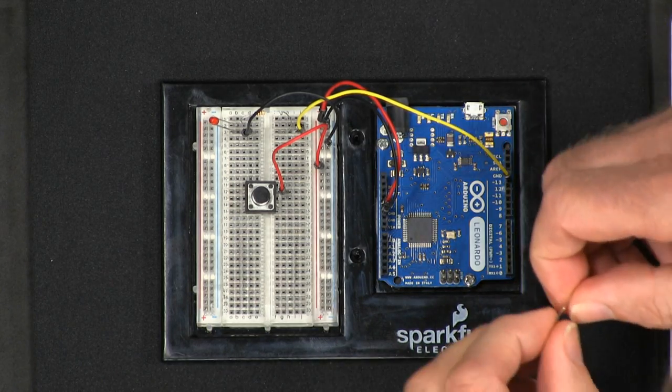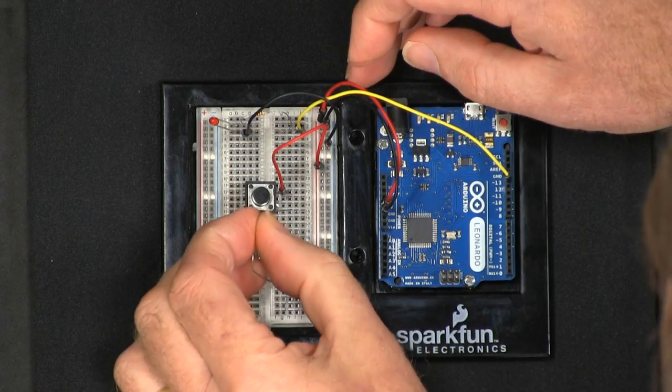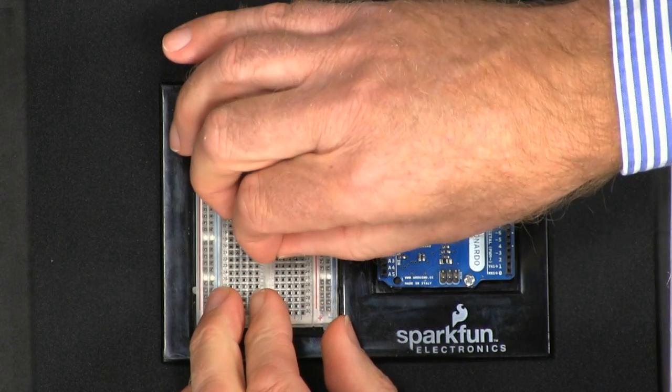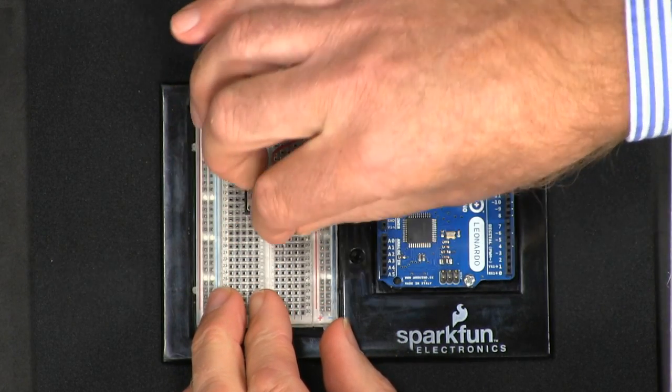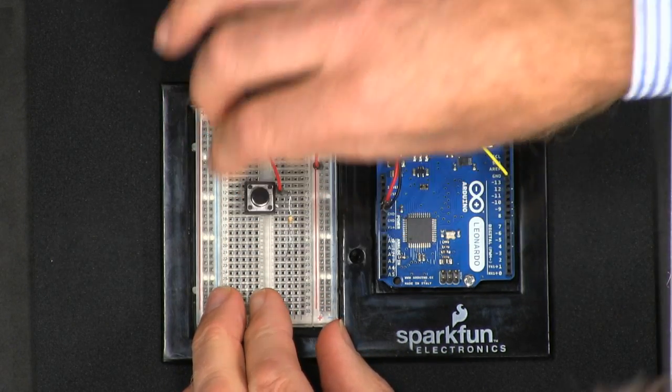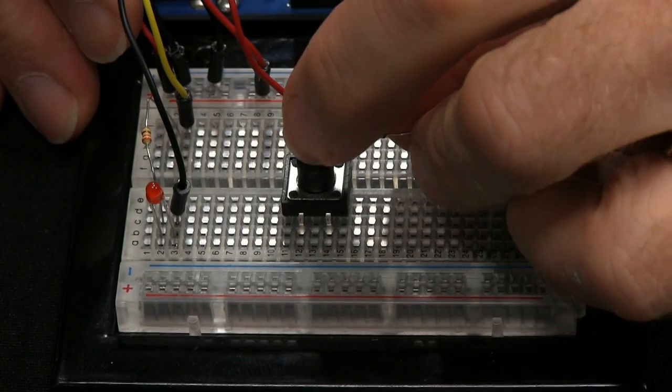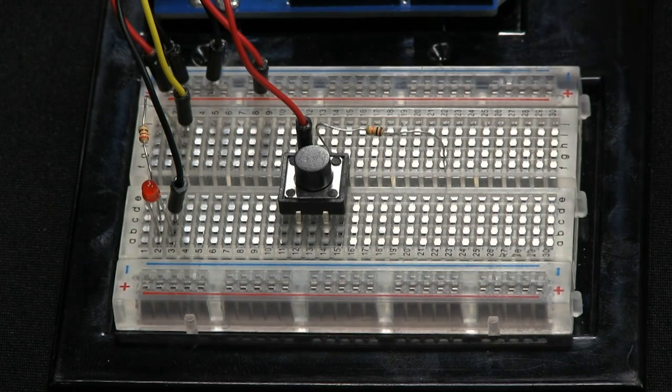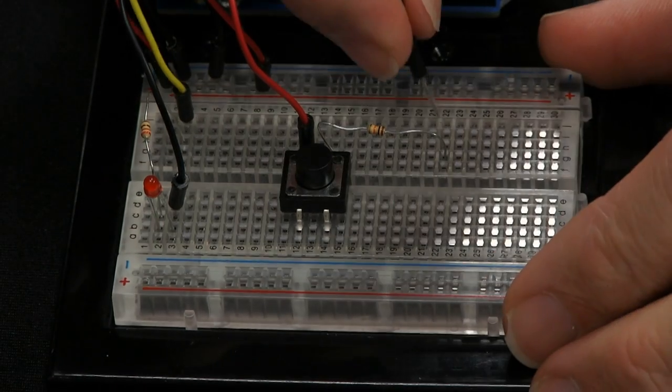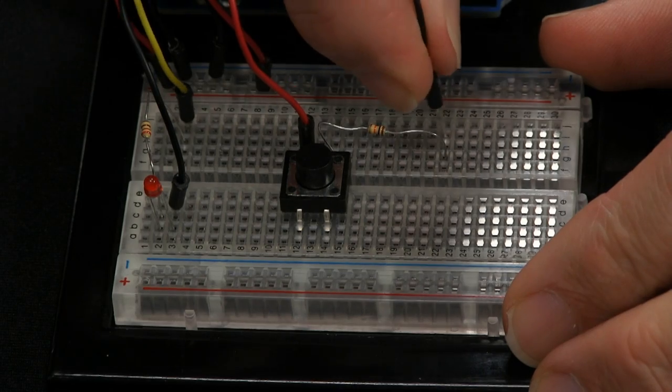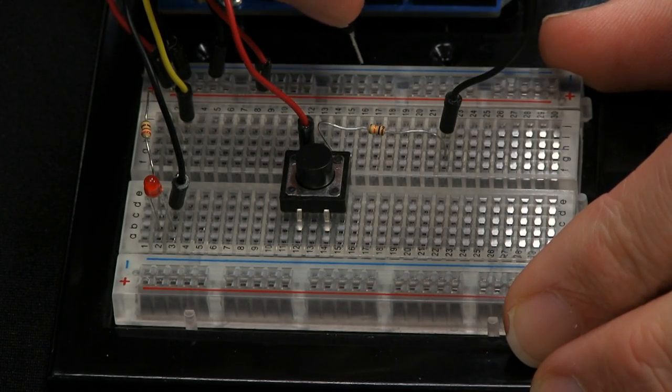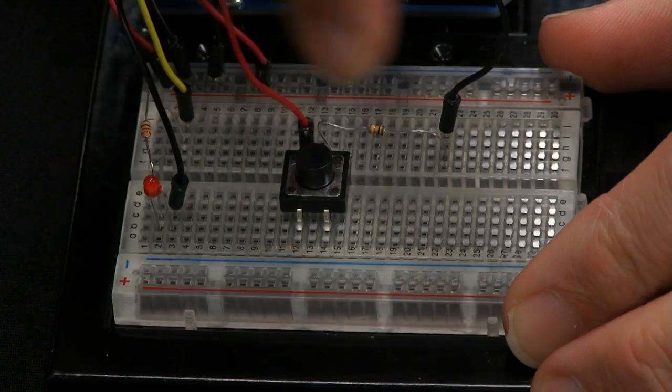So on the other side of the switch we need to have our pull down resistor. So we'll plug that in to there and put that in over here, and that is going to go down to ground. So we'll put a ground wire from there to the ground bus.